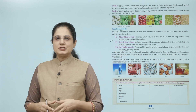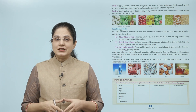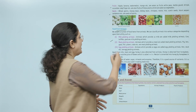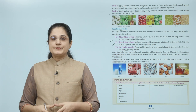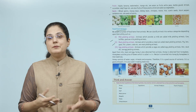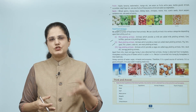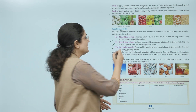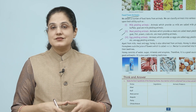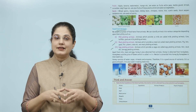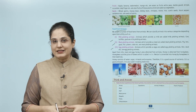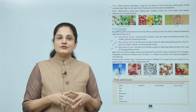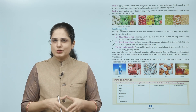Milk-yielding animals: animals which provide us milk are called milk-yielding animals — cow, buffalo, goat are milk-yielding animals. Meat-yielding animals: animals which provide us meat are called meat-yielding animals — pig, hen, goat, fish, prawn, crabs, etc. are meat-yielding animals. Egg-yielding animals: animals which provide us eggs are called egg-yielding animals — hen, duck, etc. So from animals we get milk, meat, and eggs — three types of things.